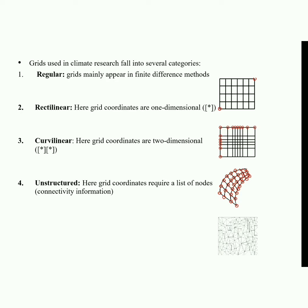Regular grids mainly appear in the finite difference method. Rectilinear grid coordinates are one-dimensional. In curvilinear grids, coordinates are two-dimensional. In unstructured grids, the grid coordinates require a list of nodes and connectivity information.